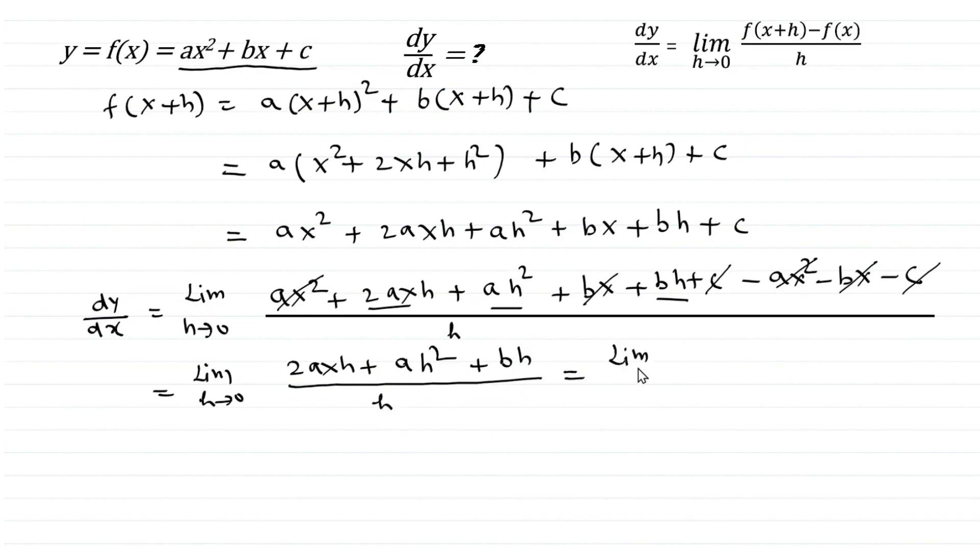Since all three terms have h common we take h common. Now the numerator's h cancels the denominator's h and what remains is 2ax plus ah plus b.